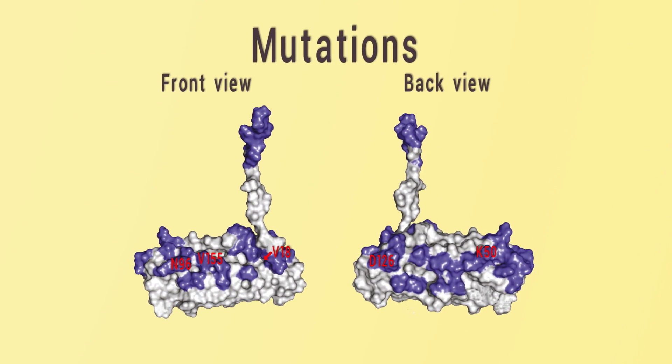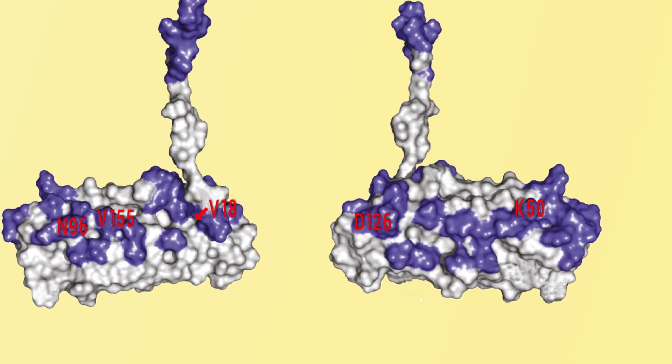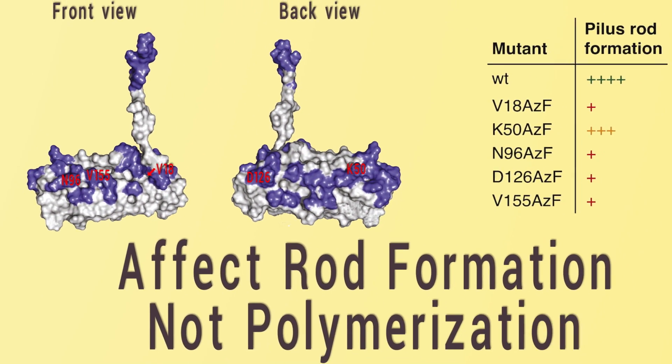We mutated residues at subunit-subunit interfaces and our results show that these mutations affect rod formation but not polymerization.